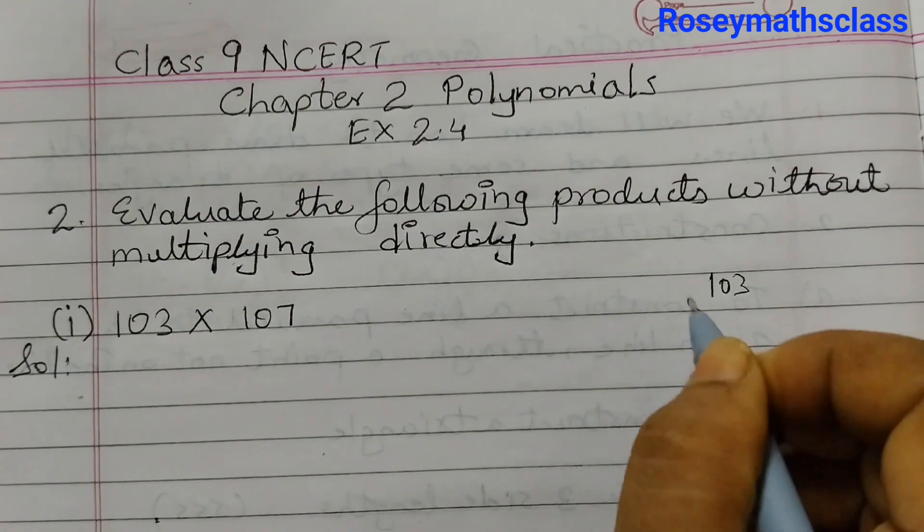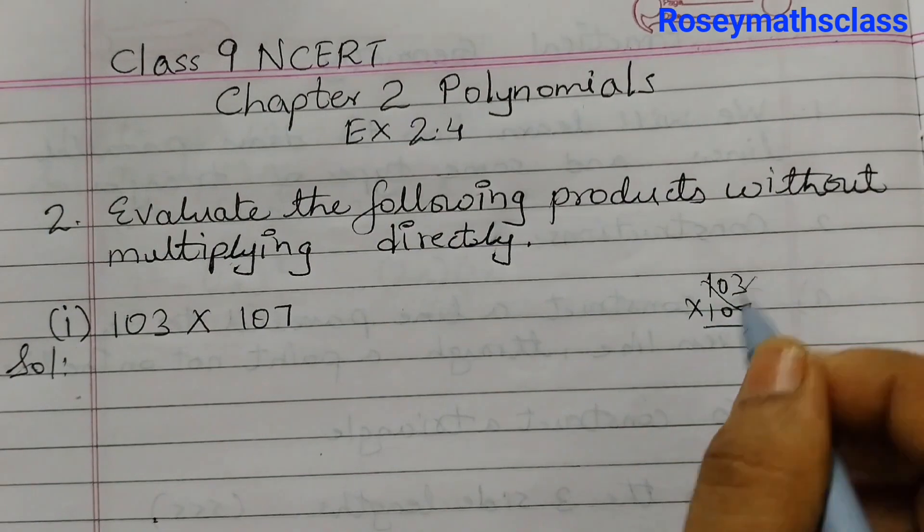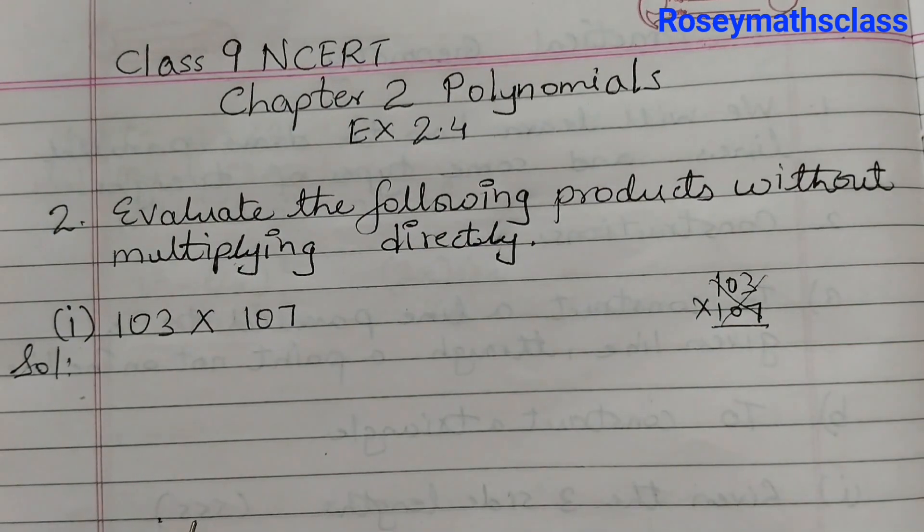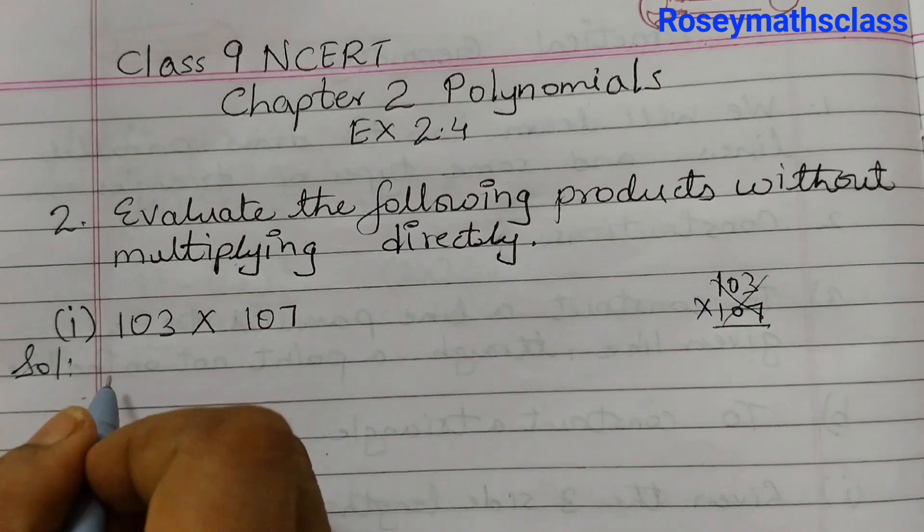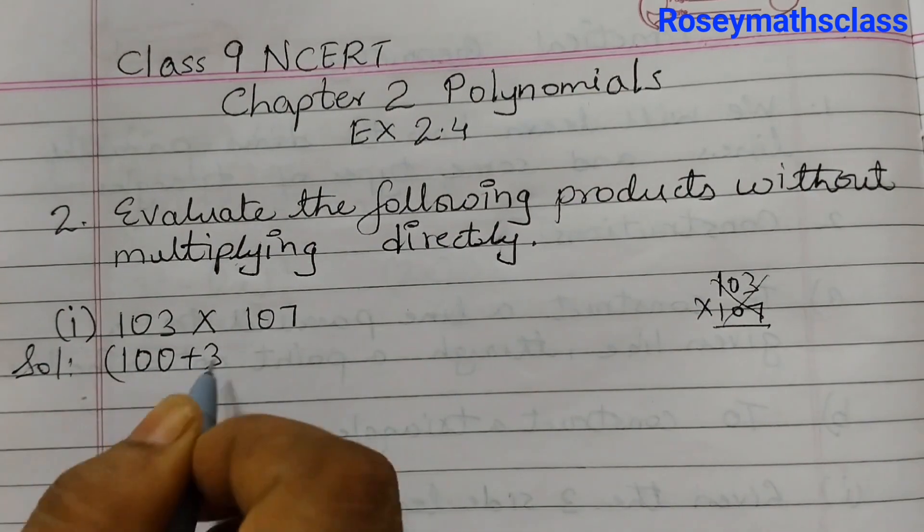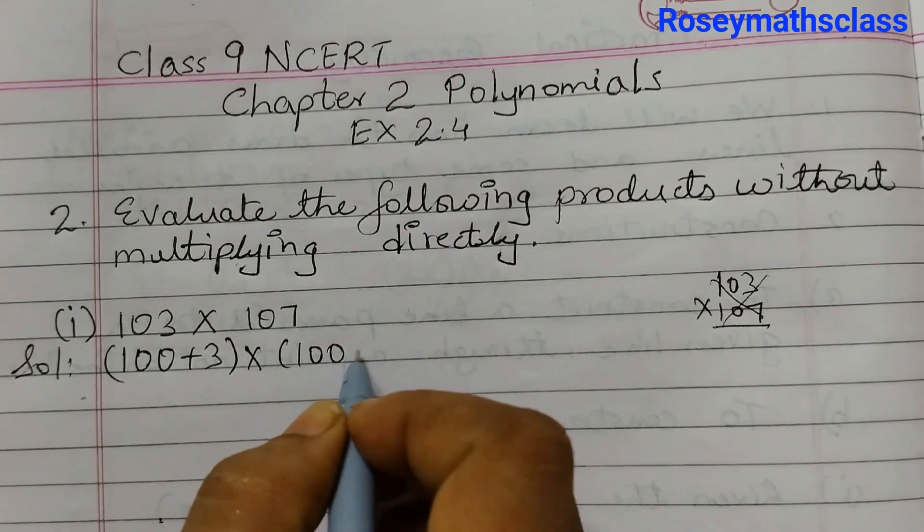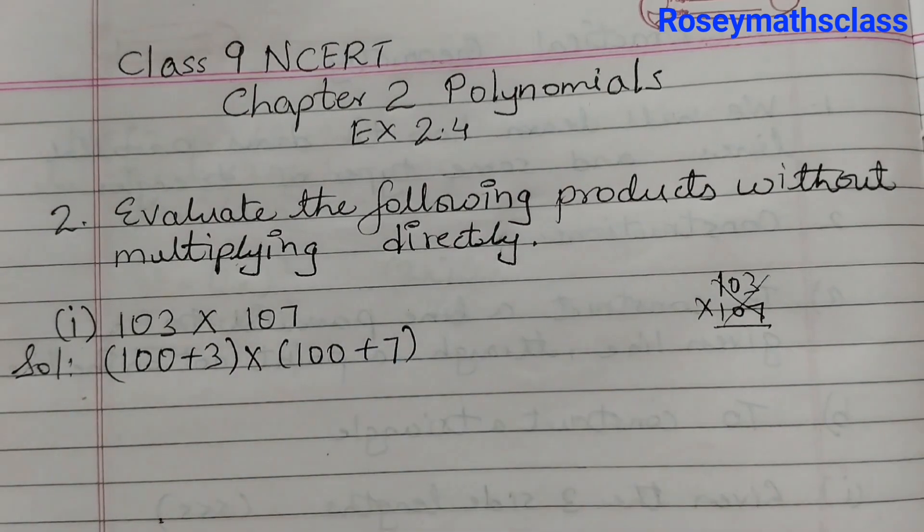But we don't have to do it like this. We need to use the identities to multiply this. So this can be written as 100 plus 3 is 103, multiplied by 100 plus 7.